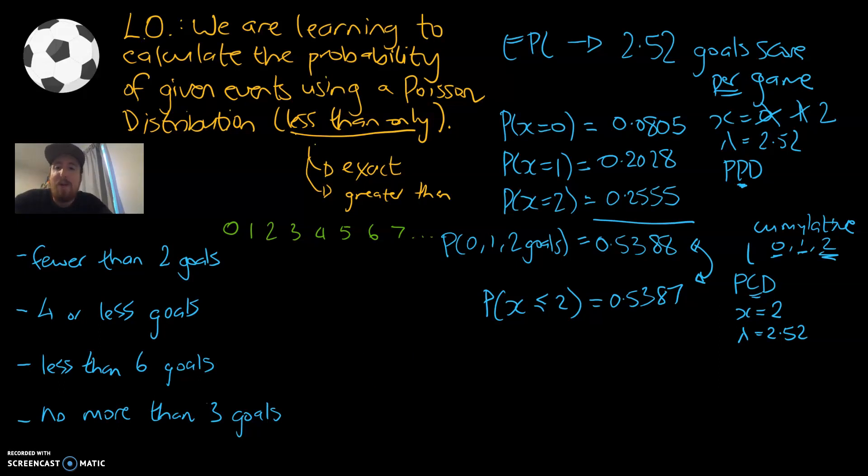Let's have a look at the question. I'm looking at fewer than two goals. A lot of us are going to be circling two, so we're going to be circling these numbers here. But two is not fewer than two. We're actually interested in that question is the same as asking, what's the probability of seeing zero or one goals at that Aston Villa game? We're not including that two. The highest value in that range that we're interested in, that we've circled, is one.